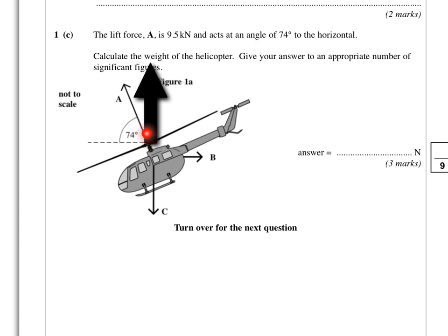You should know that you can resolve a vector into two components at right angles. If we're closing the angle and we wanted to find this component, it would be the lift force, which is 9.5 kilonewtons, cos 74. But because we're going away from the angle, it's the lift force, 9.5 kilonewtons, sin 74. If you're not sure why that is, you might need to go back and have a look at some work on resolving forces. But a little shortcut: if you close the angle, it's cos. If you go away from the angle, it's sin.